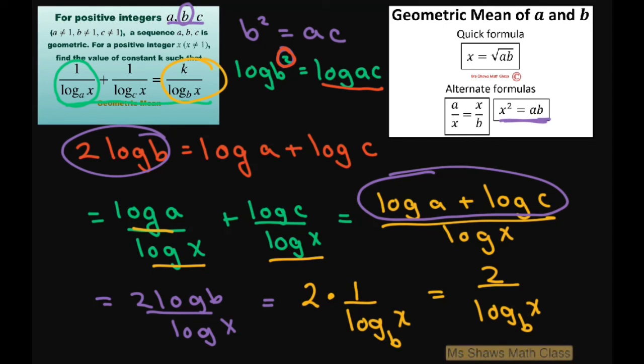Therefore, your k is in the numerator. So this equals k divided by log base b of x. Therefore, k equals 2.